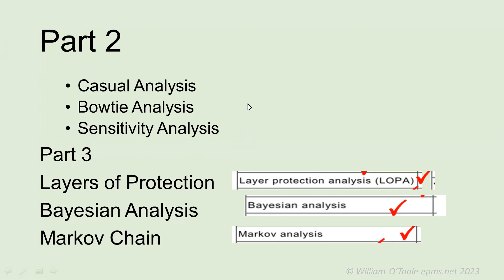That's the end of part two. We've gone through causal analysis, bow tie analysis, and sensitivity analysis. Obviously I can't go into great depth here — there are whole books on each one of these things — but it's just to give you an introduction so you can go out and look up more and see if it's applicable to your types of events. In part three, we'll be looking at layers of protection, Bayesian analysis, and Markov chains. These are highly technical things, but I'll show you how easy it is to apply them to events.